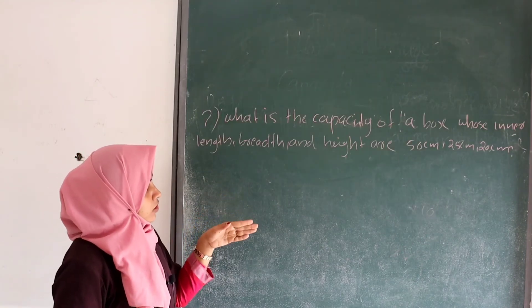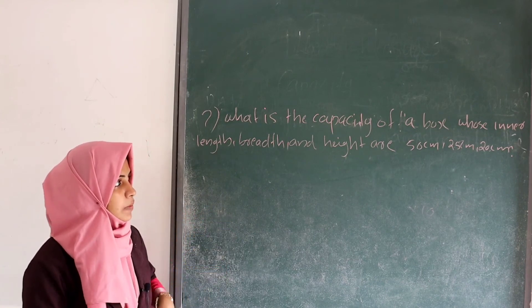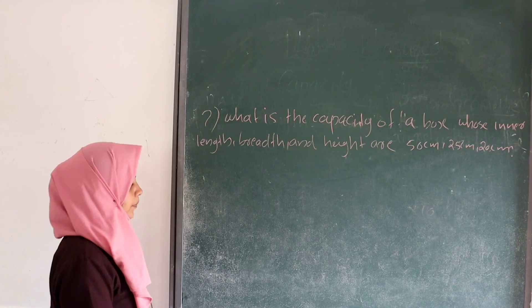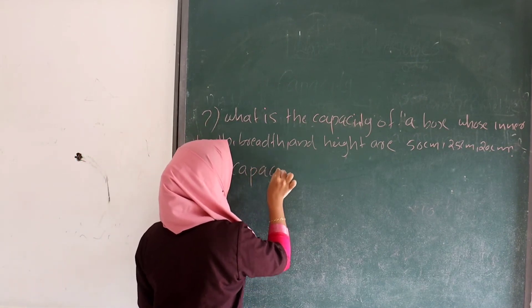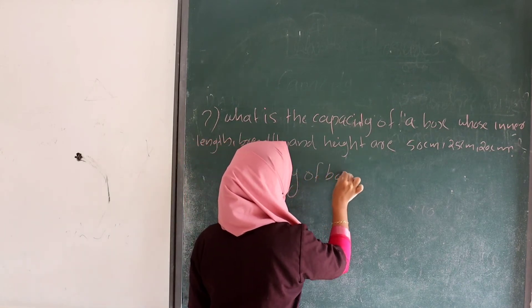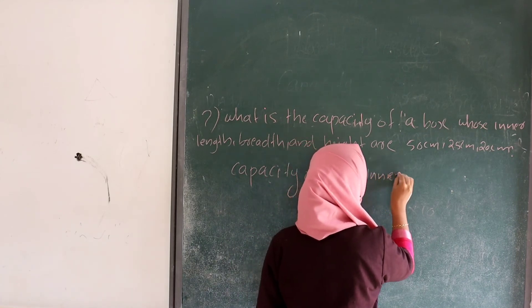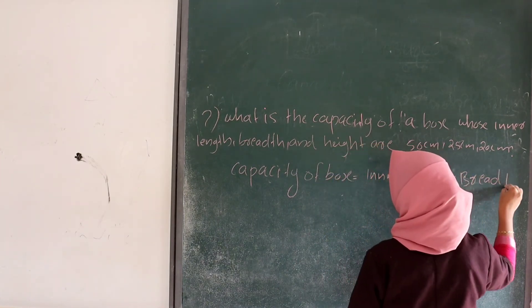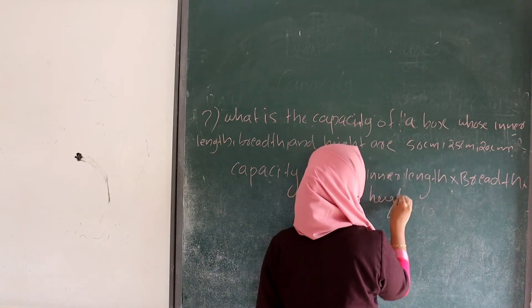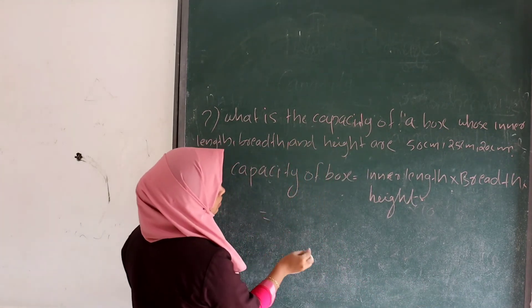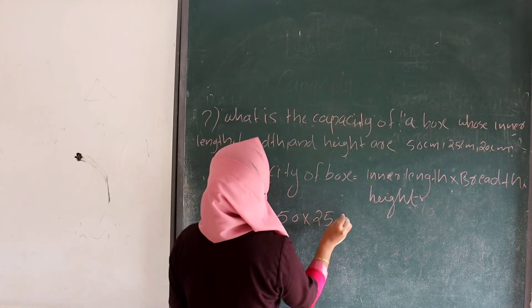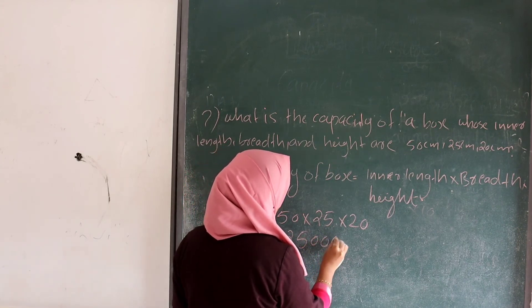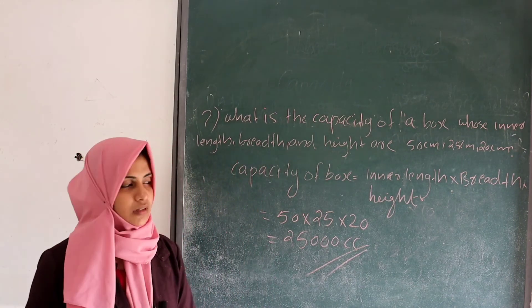The next question: what is the capacity of a box whose inner length, breadth, and height are 50 centimeters, 25 centimeters, and 20 centimeters? Capacity of the box equals inner length × breadth × height. So, 50 × 25 × 20 = 25,000 cubic centimeters.